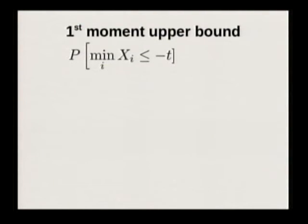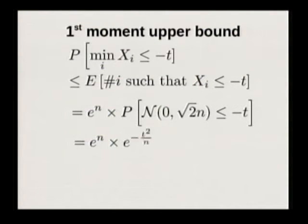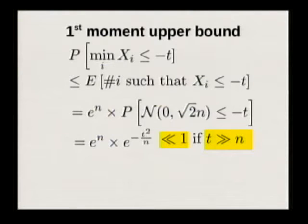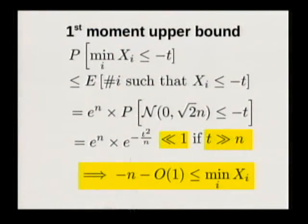To understand the GREM, you have to understand what's going on in this picture. The simplest thing you can prove is an upper bound on the minimum using the first moment method. You say the probability that you see some value that is really small is at most the expected number of leaves that small, which you can compute by linearity of expectation. That's much smaller than one if t is much more than n. This gives an upper bound on how low the minimum can go — it tells you the minimum cannot go any lower than minus n, which is also how low you get with independent random variables.